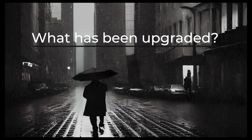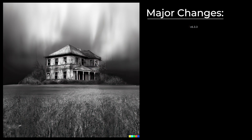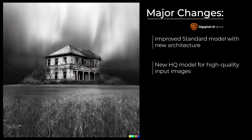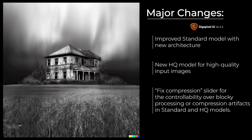What has been upgraded? Let's dive in and see what Topaz says about the upgrade. The major changes are an improved standard model with new architecture, a new HQ model for high quality input images, and a fixed compression slider for controllability over blocky processing or compression artifacts in standard and HQ models.